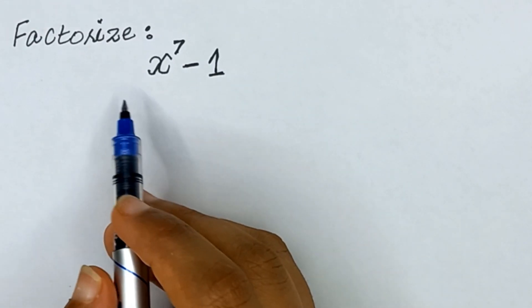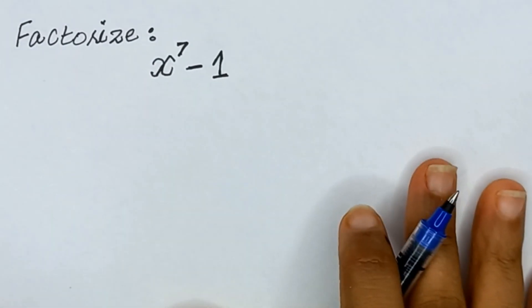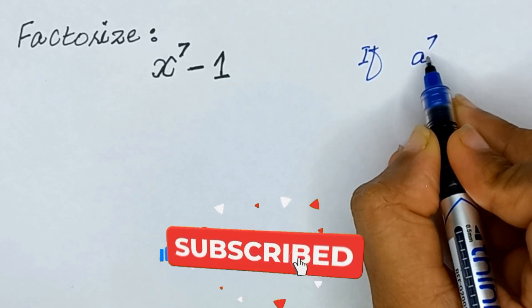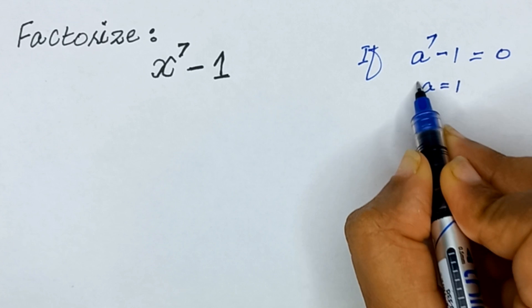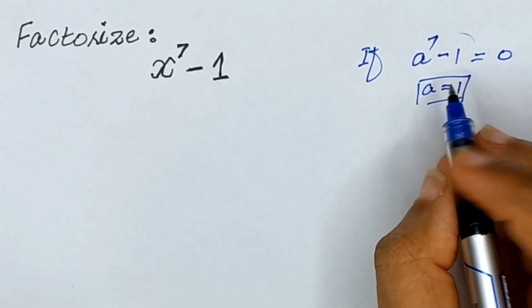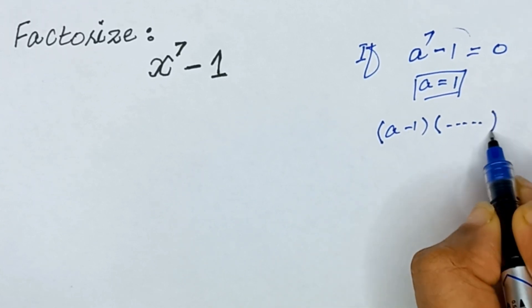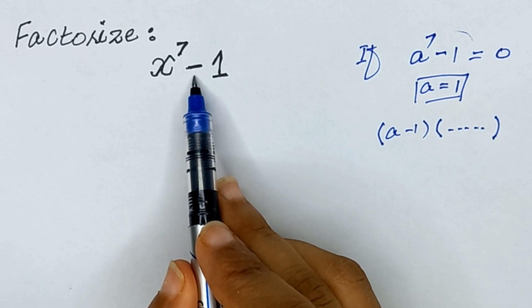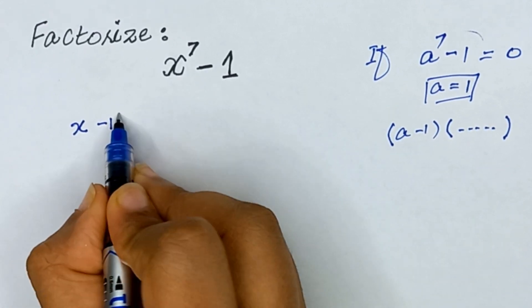Hello friends, today we will factorize the expression x raised to the power 7 minus 1. So how can we factor this expression? If we have a raised to the power 7 minus 1 equals 0, then a equals 1 will satisfy this equation, meaning a minus 1 will be one factor. So one of the factors of x raised to the power 7 minus 1 will be x minus 1.